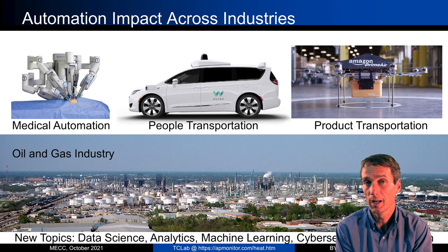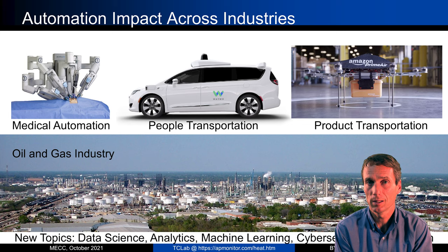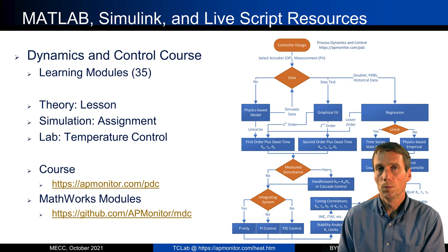Automation has impacted many industries — from medical fields, transportation, products, and how we buy things. You might order something on a cell phone and have it delivered to your GPS location. There are also many new topics in automation and control including data science, analytics, machine learning, cybersecurity, and digitalization.